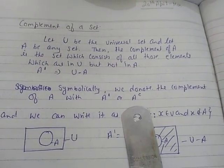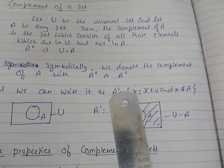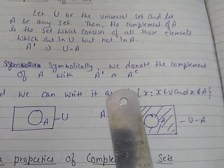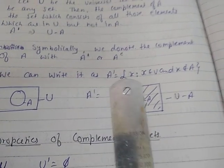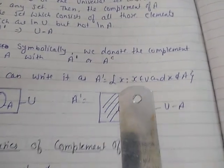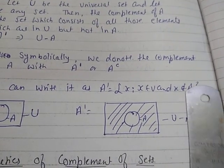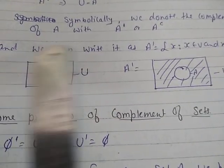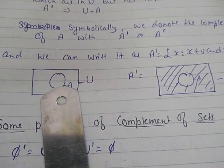Complement is a part of the difference of sets, but complement should be with the universal set itself. That means A plus A complement equals universal. Difference with the universal set is called complement. In set builder form, A complement equals the set of all X such that X belongs to U and X does not belong to A — then it will be your A complement.